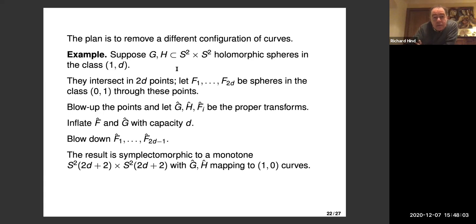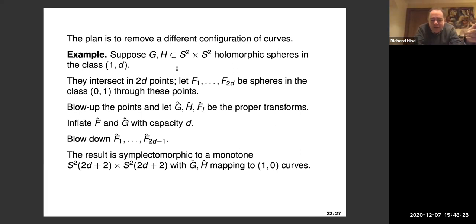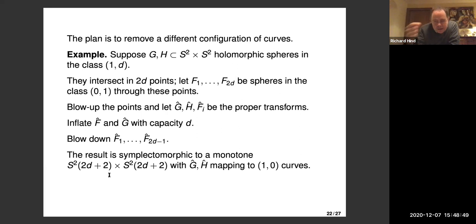G and H have area 2+2d, since the areas of the S²'s are 2. After blowing up, G and H have self-intersection zero, so their area doesn't change under inflation; they stay at area 2d+2. But a smooth fiber like T₀, which starts with area 2 and intersects G once and H once, bumps up to 2+2d after inflation. Playing with inflation, blowing up, and blowing down gives a new copy of S²×S², still monotone. The transforms of G and H become symplectic spheres in the (1,0) class — we've converted the (1,d) class to the (1,0) class.